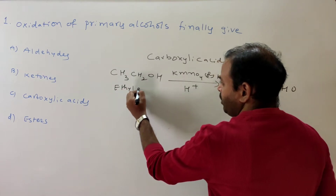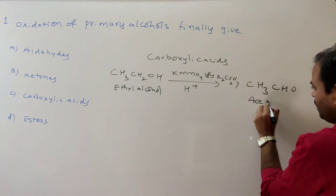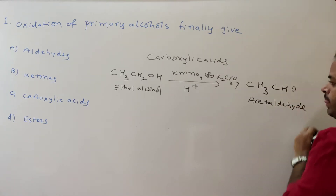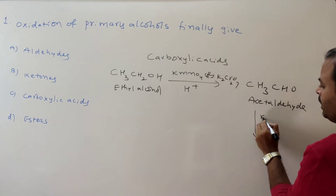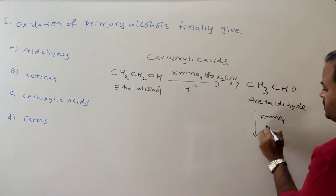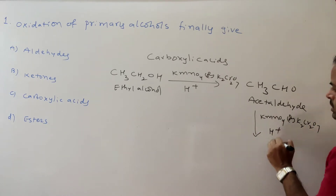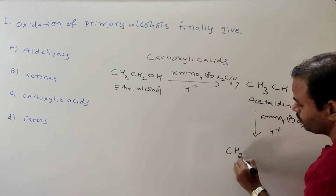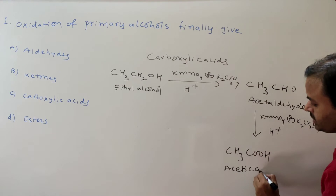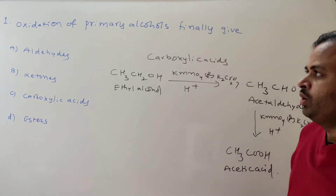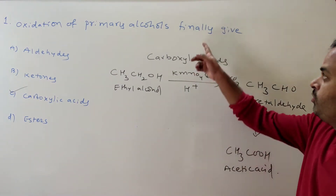What is this compound? This is ethyl alcohol. And this one is acetaldehyde. This acetaldehyde again undergoes oxidation in presence of the same KMnO4 or K2Cr2O7 under acidic conditions, and converts into carboxylic acid — CH3COOH, which is acetic acid. So the answer is option C: carboxylic acid.